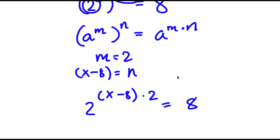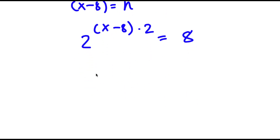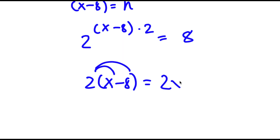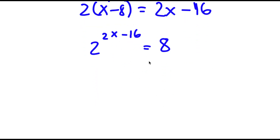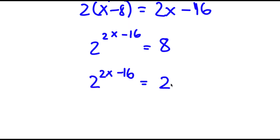This equals 8. Distributing the 2 gives 2 times x is 2x and 2 times negative 8 is negative 16, so I have 2 to the power of 2x minus 16 equals 8. To solve this, I want both sides to have the same base. Since 8 equals 2 to the power of 3, I can rewrite this as 2 to the power of 2x minus 16 equals 2 to the power of 3, and now both bases are the same.